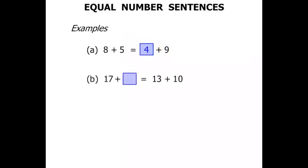The next one: 17 plus something equals 13 plus 10. Well this time, the numbers on the right, 13 plus 10, let's add them together, we get 23. So we get 23 on that side, we need to get 23 on the other side as well.